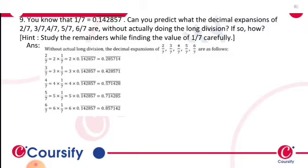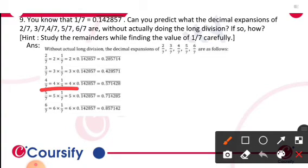The next is 4/7. 4/7 is equal to 4 times 1/7, that is equal to 4 times 0.142857 bar, that is equal to 0.571428 bar.